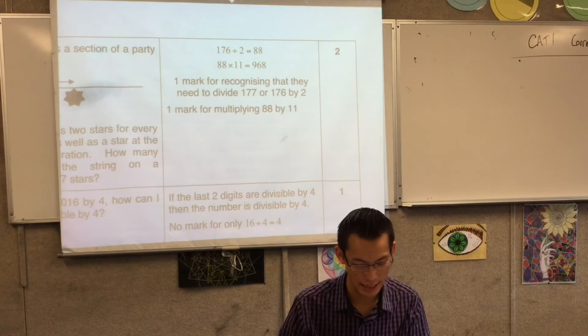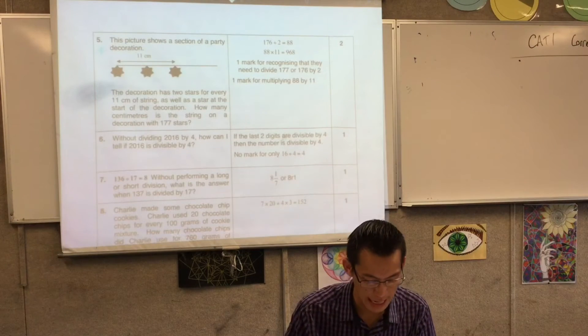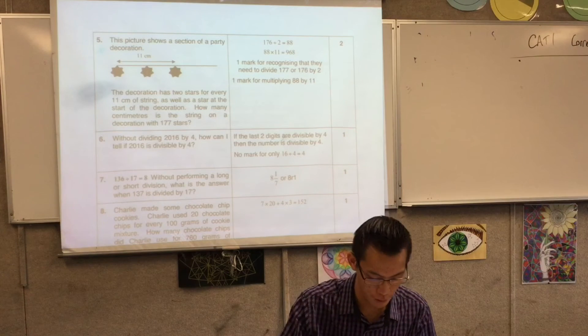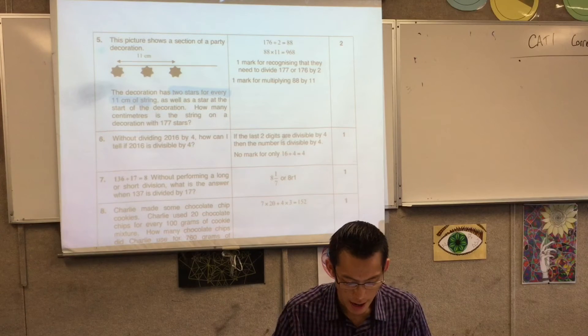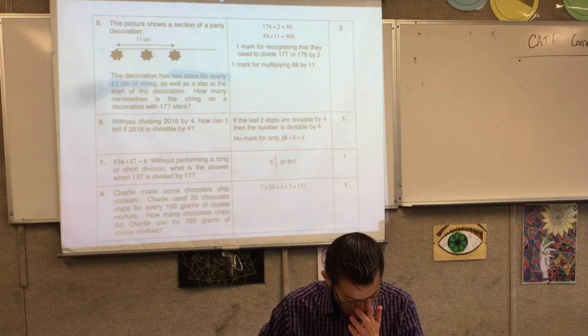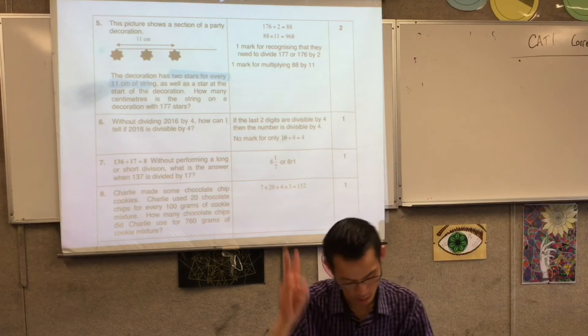The first mark is for recognizing that you had to do a division, and you had to divide by two. And that's because of how many of the decorations you can fit. It has two stars for every 11 centimeters. And then it says one mark for multiplying 88 by 11, because that's how many gaps you're going to get. So two marks there.